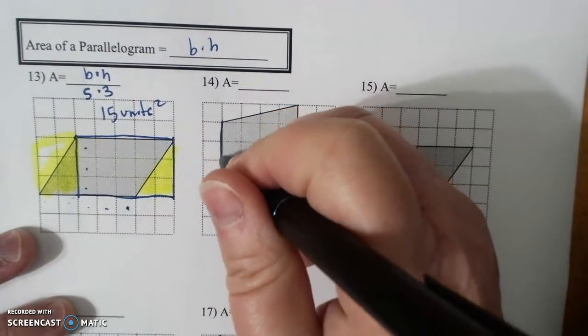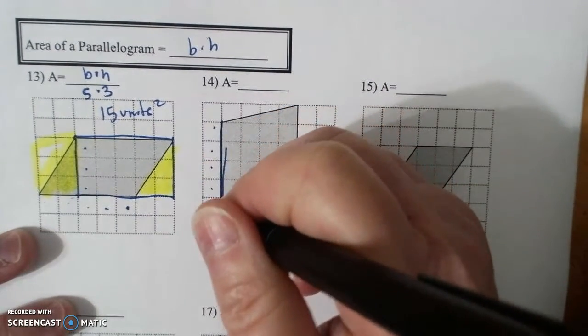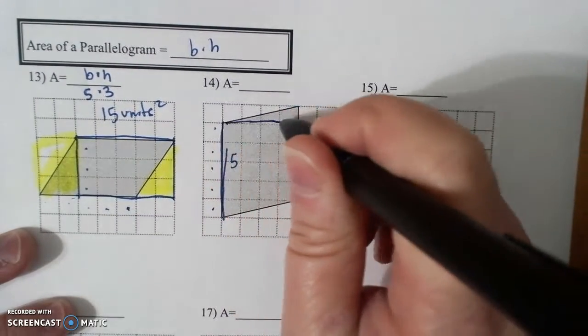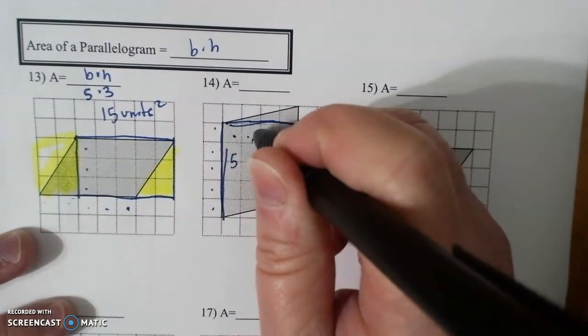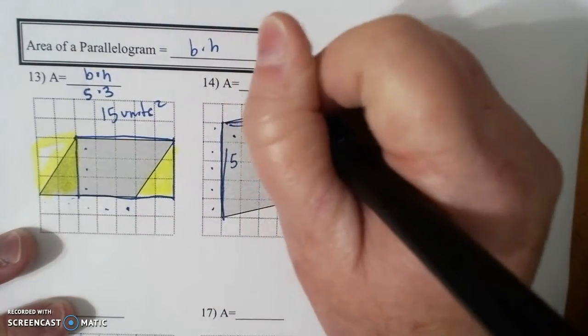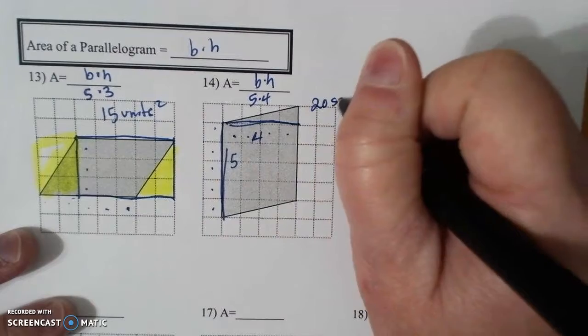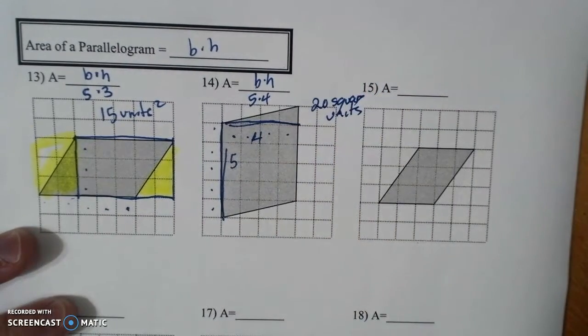So this is your base. 1, 2, 3, 4, 5. And then remember perpendicular is a height. 1, 2, 3, 4, which is 4. So base times height is 5 times 4, which is 20 square units. And I can write unit squared or square units.